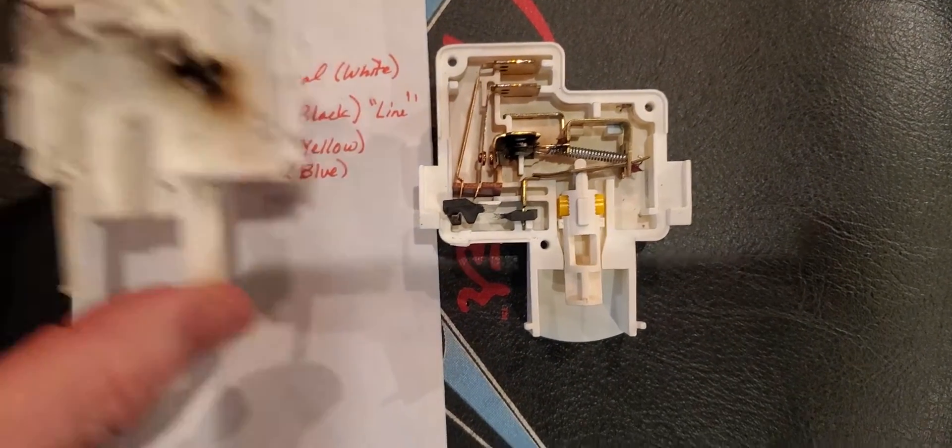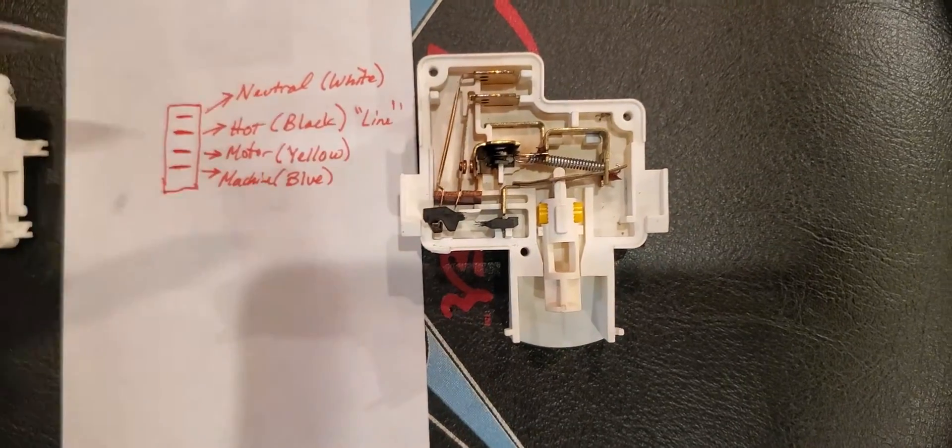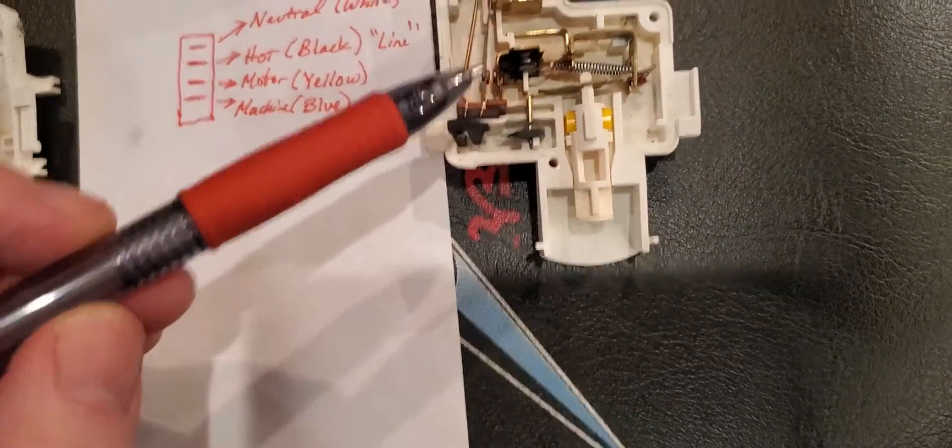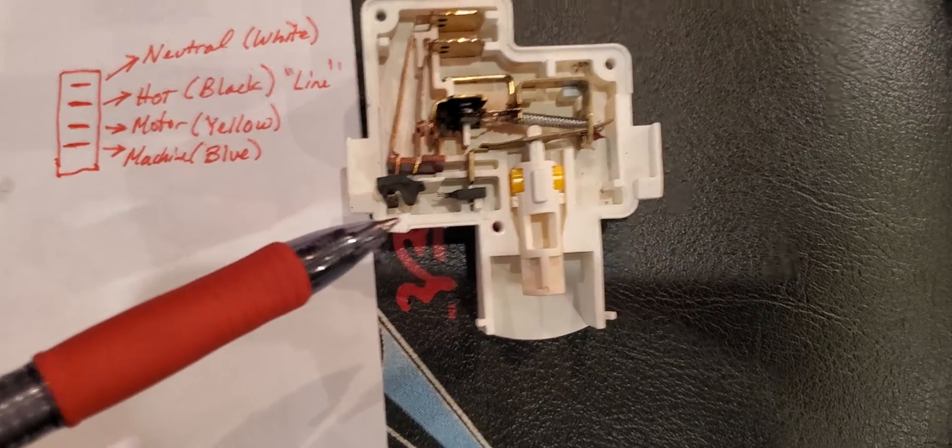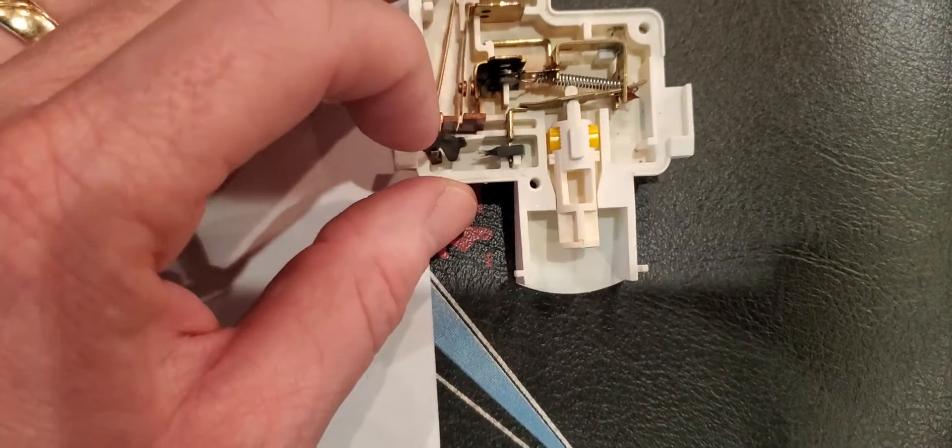So the switch probably got hot. I mean, that's why it's brown. It was good that it failed, but it didn't fail here. It failed here. And this fusible link business, what it is, is actually a plastic composite type material.